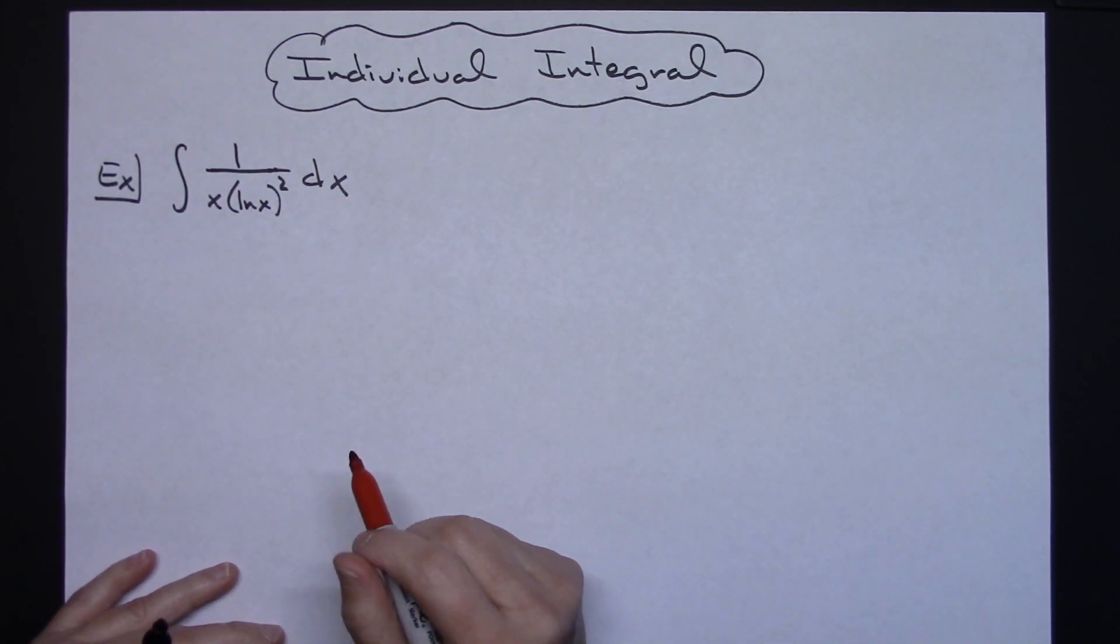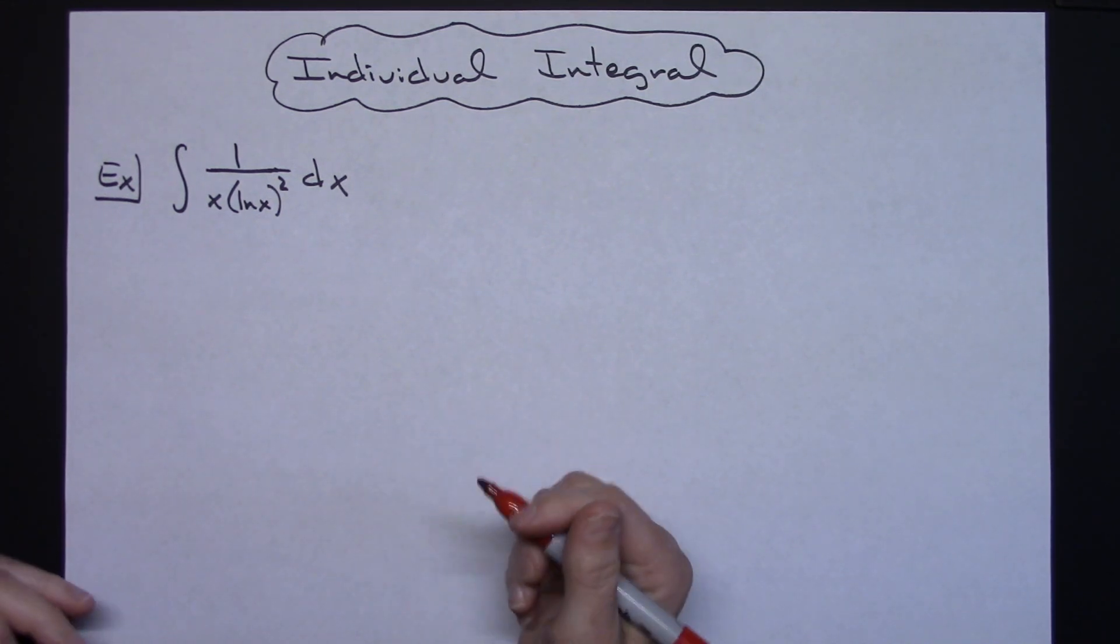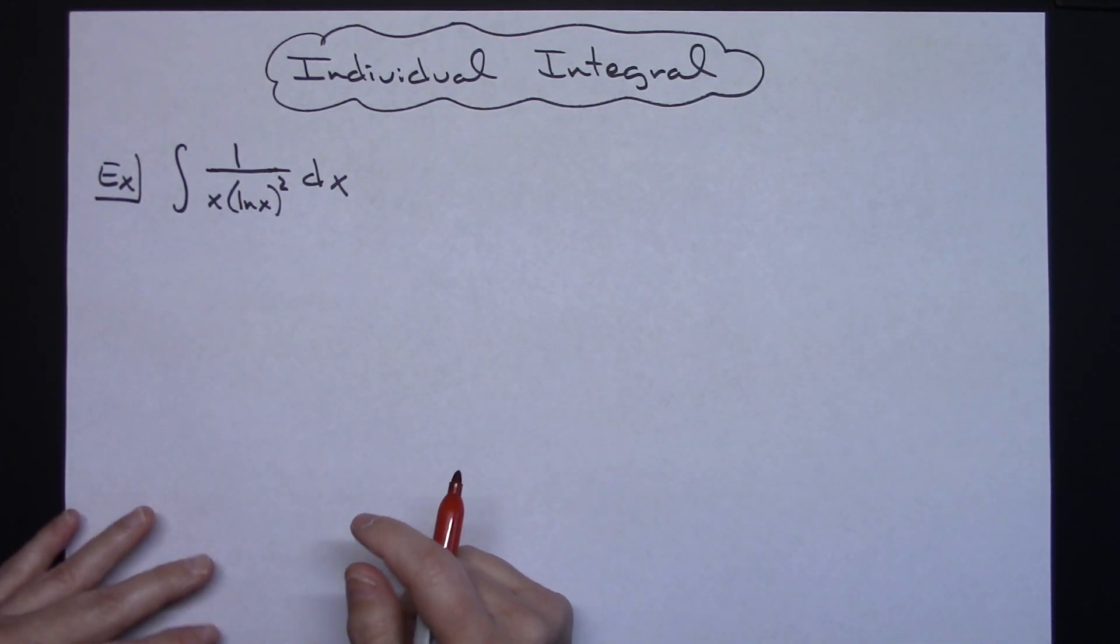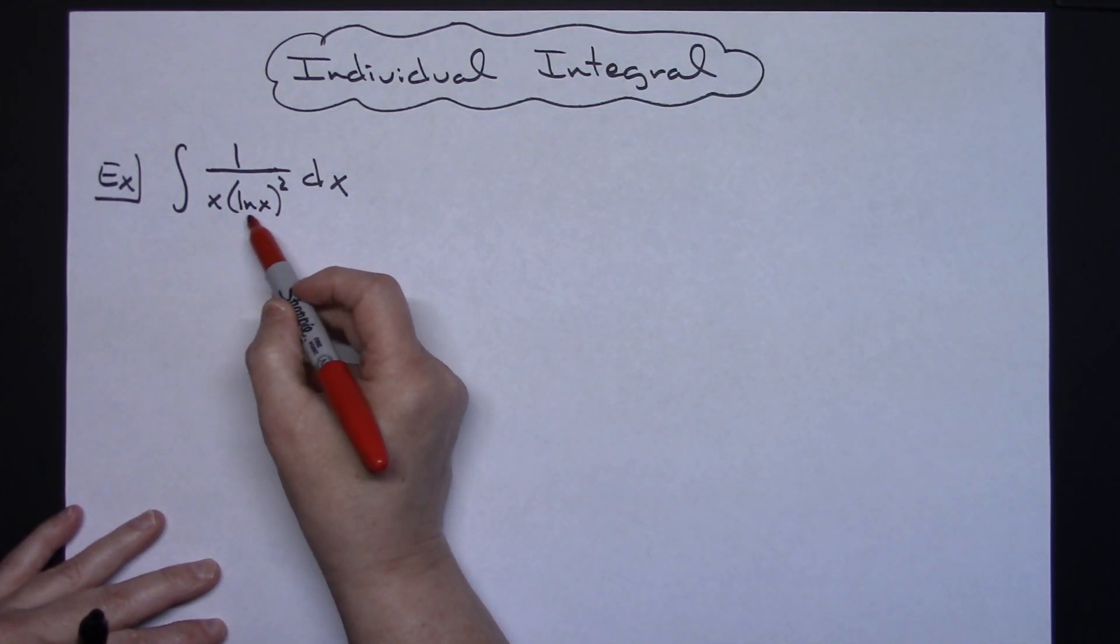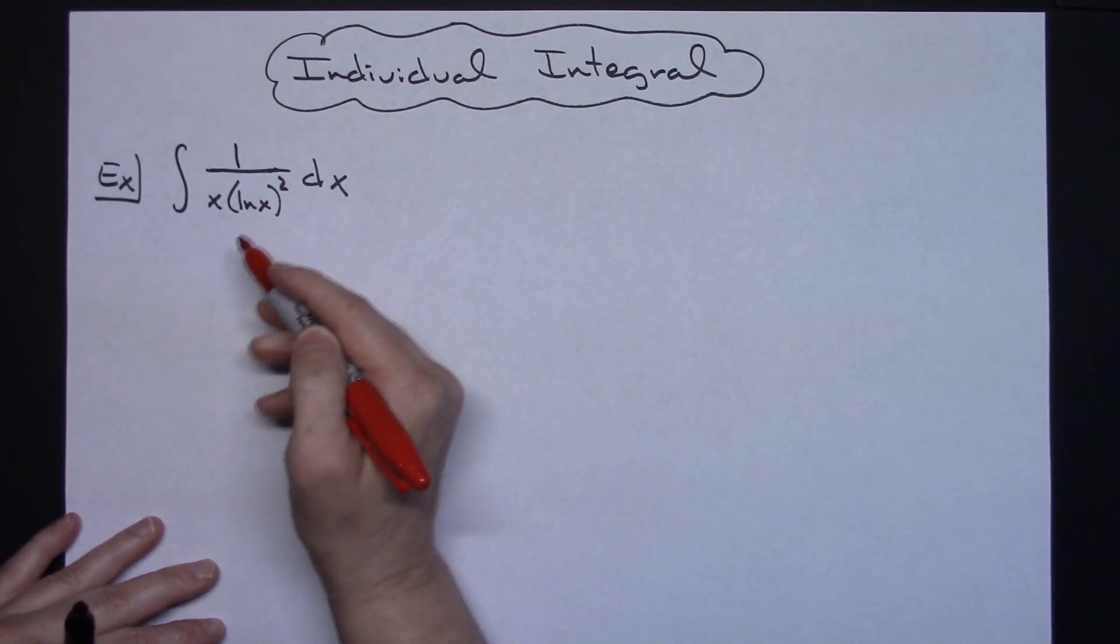Now this is going to be a typical u substitution integral that would be typically found in like a calc 1 class. So what I'm going to do for my u is I'm going to let it be this inside portion right here of natural log of x.